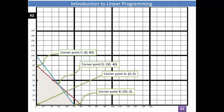So now, all four corner points have been identified. The next step then is to substitute each corner point into the objective function and determine which of the corner points results in maximizing profits.